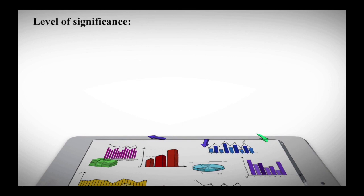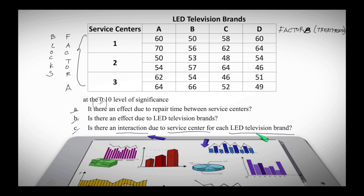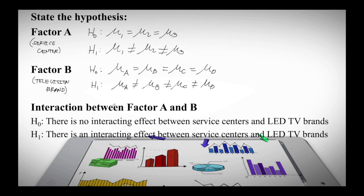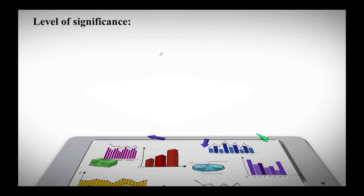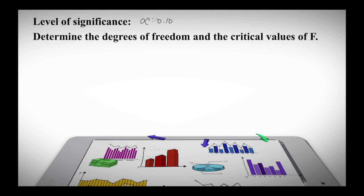Step 2: Level of significance. The level of significance is 0.1 — note this differs from the 0.05 used previously. Step 3: Determine the degrees of freedom and critical values of F.